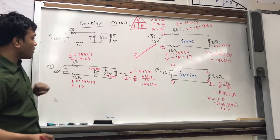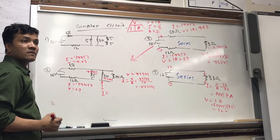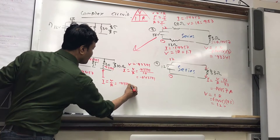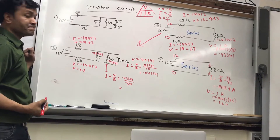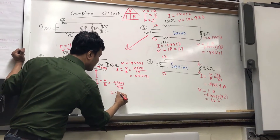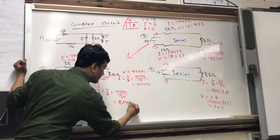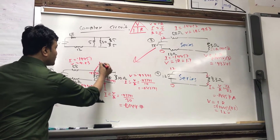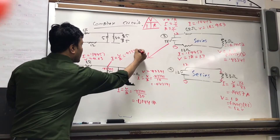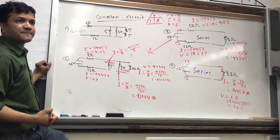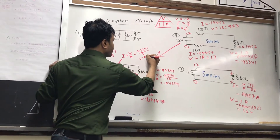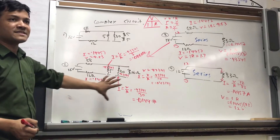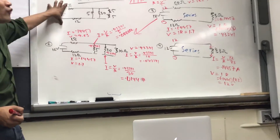Now what about the current over here? Current over here is again V over R. V is 0.43341 and R is 30. What about the current over here? V over R. V is 0.43341 and R is 5. So what should be right here? 0.086682. Now we have current and voltage here, current and voltage here, current and voltage here, current and voltage here — current and voltage everywhere.